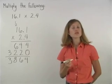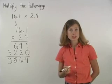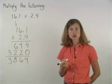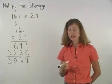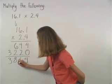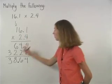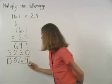we have a total of 2 digits to the right of the decimal point in our original numbers. This means we'll have 2 digits to the right of the decimal point in our final answer. So 16.1 times 2.4 is 38.64.